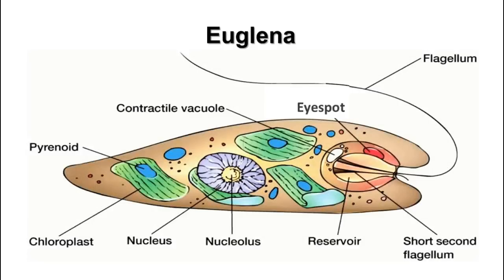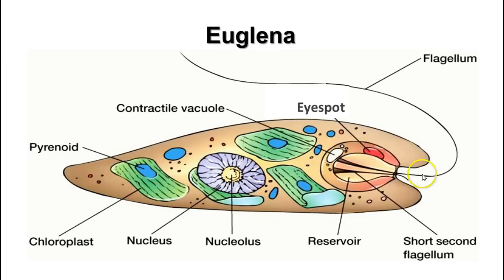Next, we have euglena. There's an eye spot in euglena—it's not an eye, but it detects light, allowing euglena to move toward the light because it has chloroplasts that undergo photosynthesis. Euglenoids are both photosynthetic and heterotrophic—they can eat other things if there's no light available. They also have a nucleus, a contractile vacuole, and two flagella: a longer one and a shorter one used for movement, with one acting like a rudder to choose direction.